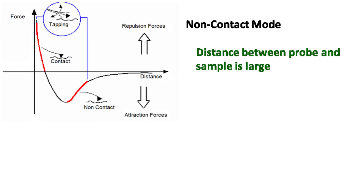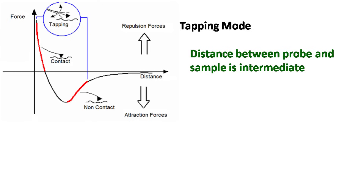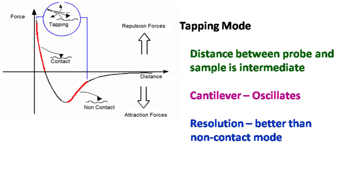In non-contact mode, the distance between the probe and the sample is kept large. As a result, the cantilever is attracted. The resolution obtained is low, however the sample is not damaged. In tapping mode, the distance between the probe and the sample is kept intermediate. As a result, the cantilever oscillates and the resolution obtained is better than in non-contact mode.